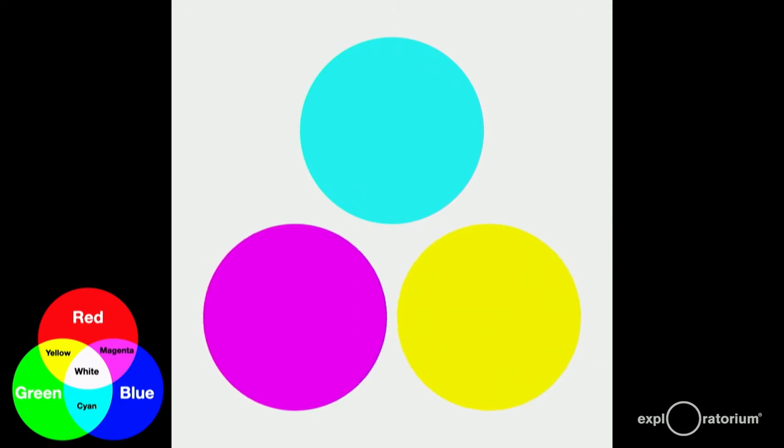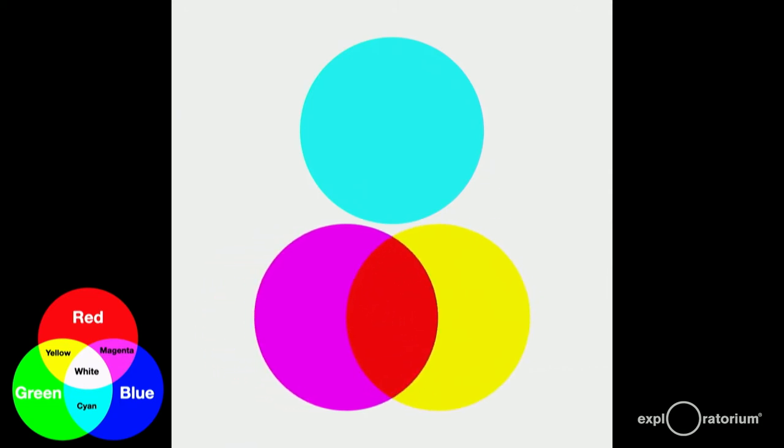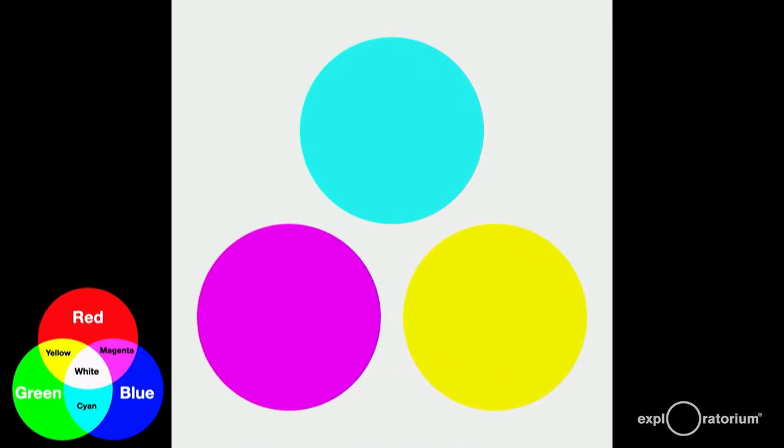If we mix magenta and yellow, the magenta subtracts green from white, and the yellow subtracts blue from white. Subtract green and blue from white, and the only color left is red. That's what we get. Let's see what the other combinations give us. Let's mix cyan and yellow. Cyan subtracts red, and yellow subtracts blue. Take away red and blue from white, and the only color left is green.